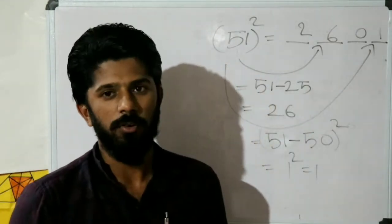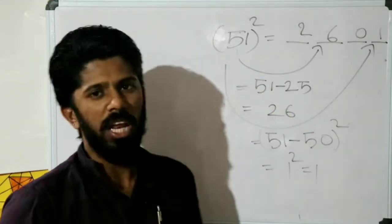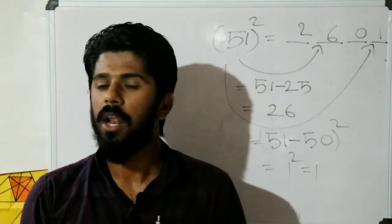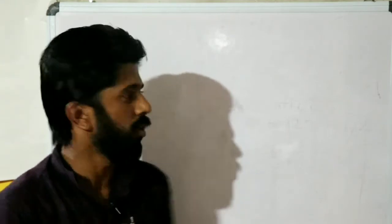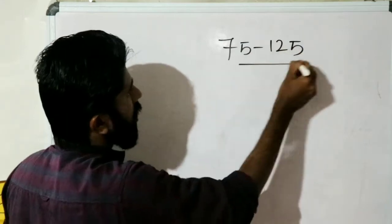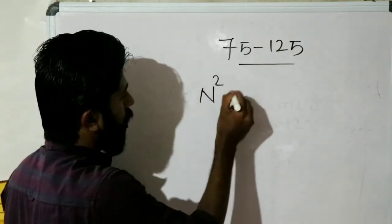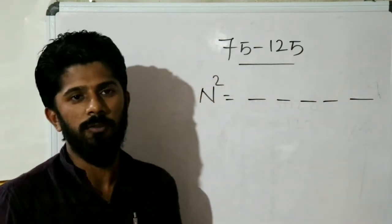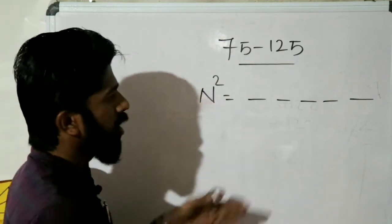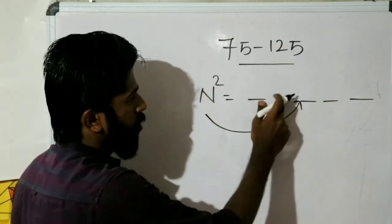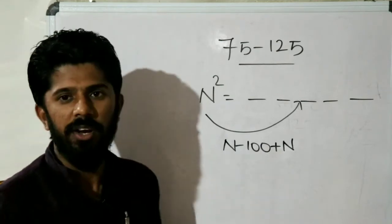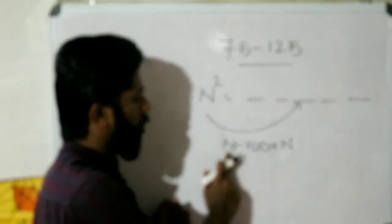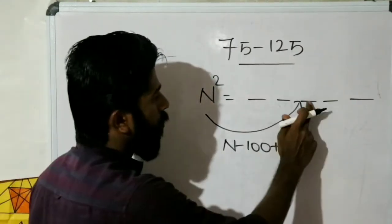So we have 26 and 01. The answer for 51 whole square is 2601. Working through the steps: 600 plus 1 gives the final digits, and combining gives 2601.